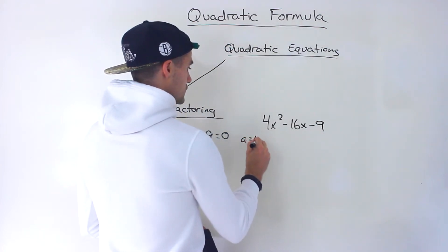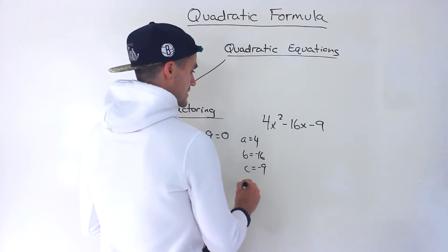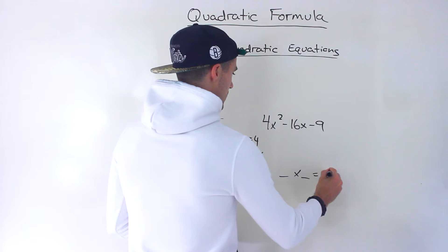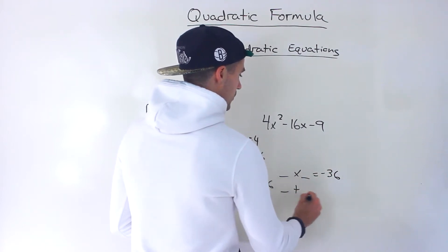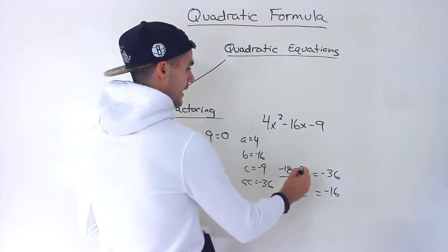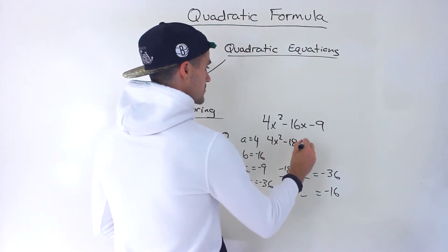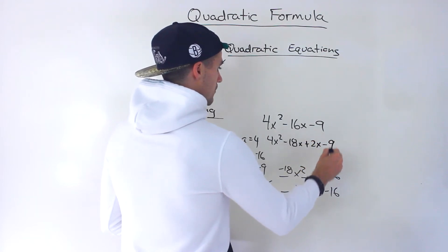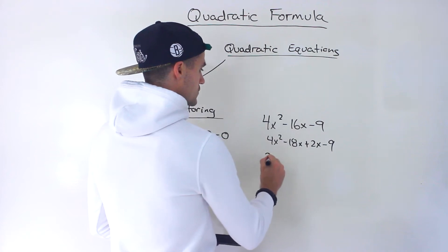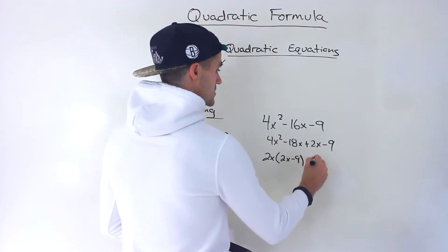The a value is 4, the b value is negative 16, the c value is negative 9. The ac value is negative 36, and so two numbers that multiply to negative 36 and add up to that b value of negative 16 — what would they be? Negative 18 and 2. So we'd have 4x² minus 18x plus 2x minus 9.